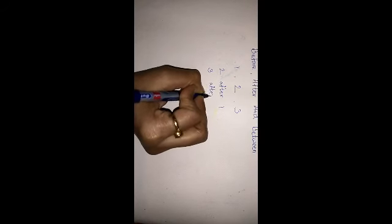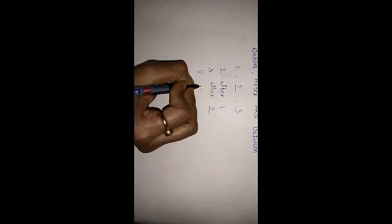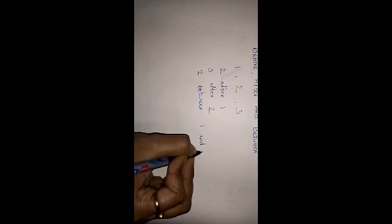One more example for before, after and between. Let's take the first three numbers: one, two, three. Two comes after one and three comes after two. Whereas two comes in between one and three.